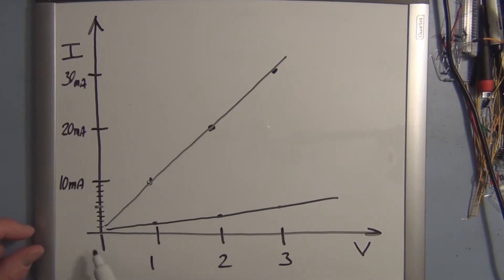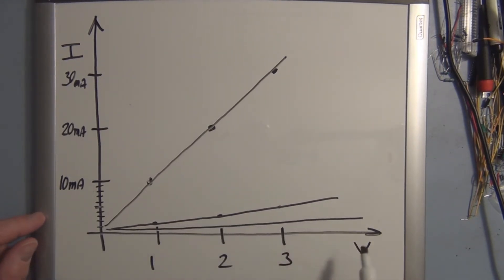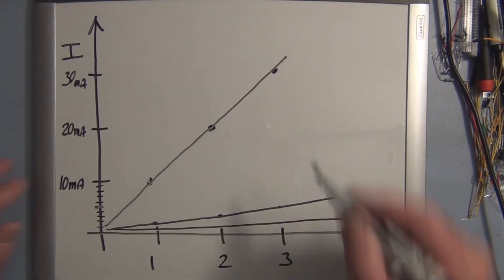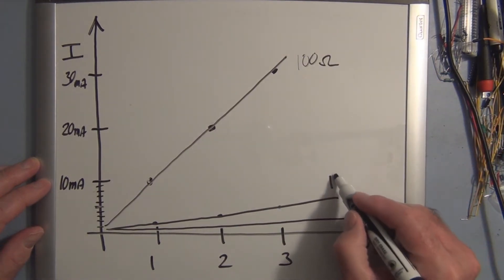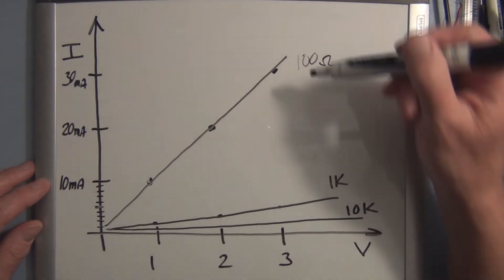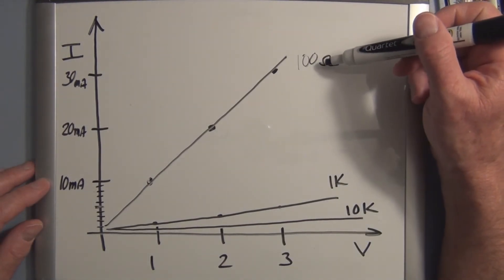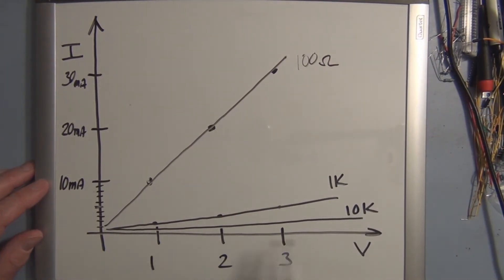For the 10k, it's a little hard because of the scale, but it's going to be more flat than the 1k line. So this is the 100 ohm resistor, this was the 1k, and this was the 10k. Notice these are all by a factor of 10 — 100, 1k, and 10k. As the resistance increases, this line becomes more horizontal.